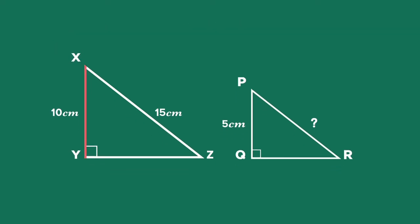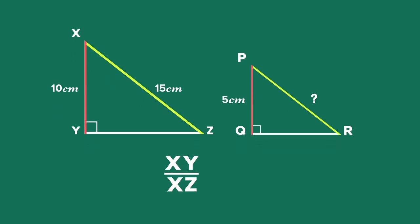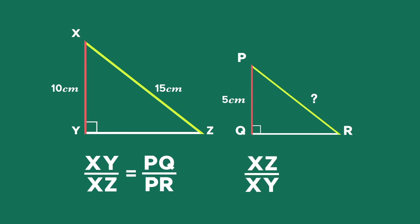XY corresponds to PQ, and XZ corresponds to PR. YZ corresponds to QR. But we have no information about these sides, so we probably won't use them. Since the triangles are similar, the ratios of the corresponding sides are equal. So we can write XY divided by XZ equals PQ divided by PR. It's also correct to write XZ divided by XY equals PR divided by PQ.